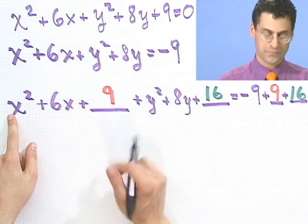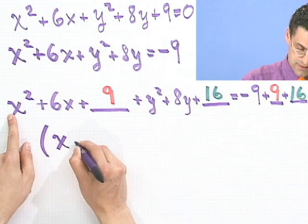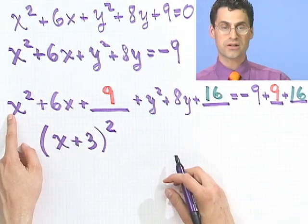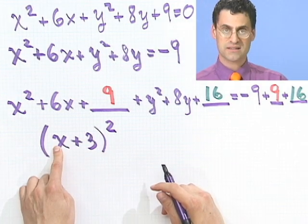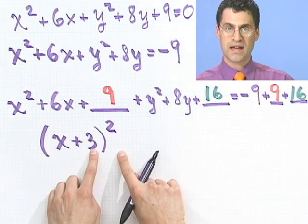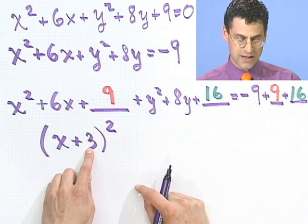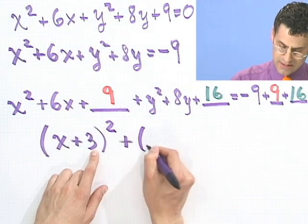This should factor to be a perfect square. And in fact, if you notice, it does. It's x plus 3 all squared. You can check that if you actually foiled that out, you got a foil. x times x is x squared. Inside terms are 3x. Outside terms are 3x. That's 6x. And notice that 3 times 3 is 9.